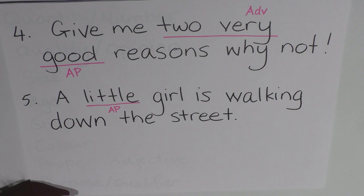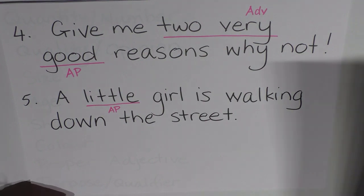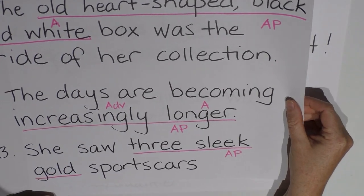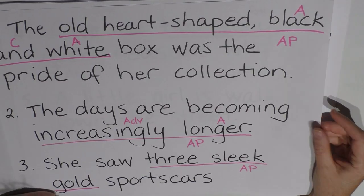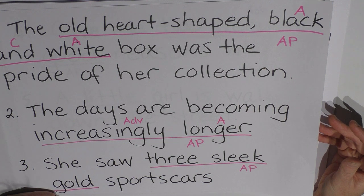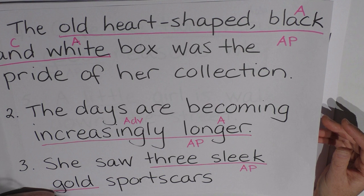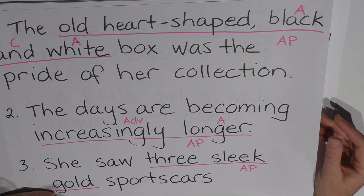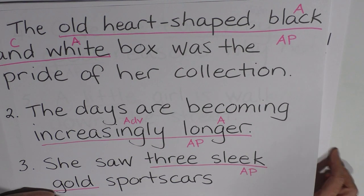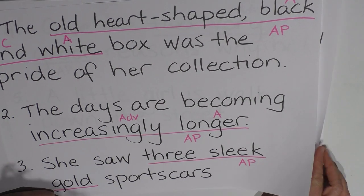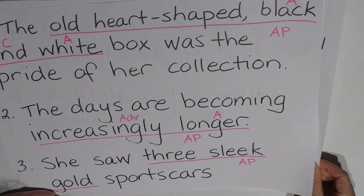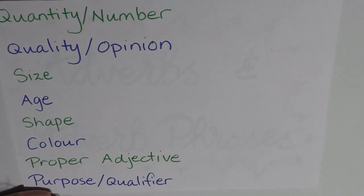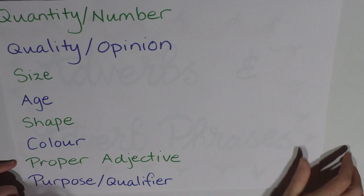Now we might take a little bit of time here to look at the order that the adjectives are written in. So as English speakers, we just say our adjectives in a certain way, without thinking about what order we say them in. But if we said gold three sleek sports cars, or heart shaped white and black old watch, I think it'd just sound a bit weird, we'd feel a bit confused by it. And that's because we do actually have a set order for adjectives.